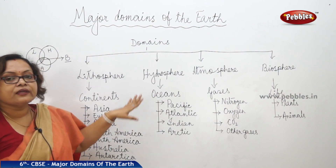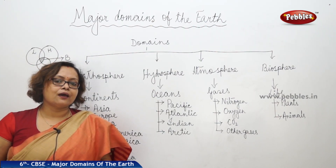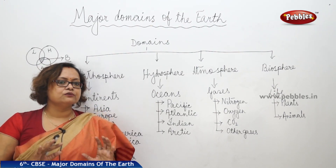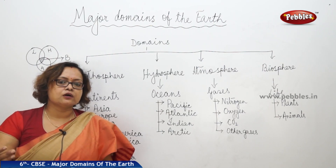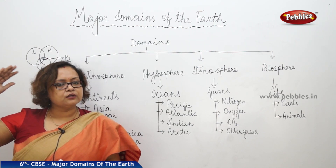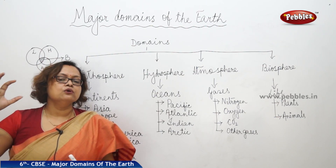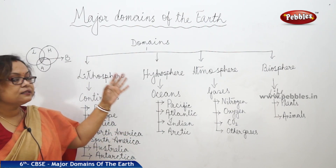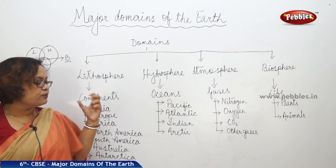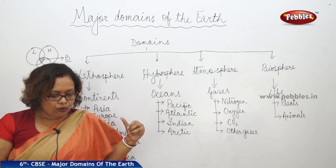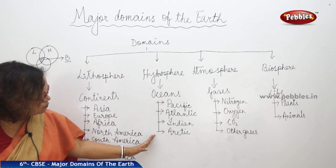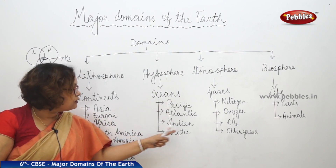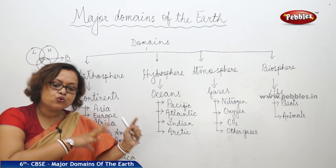We know that earth is called a blue planet because most of the earth consists of water. If you could observe earth from outside, you would see it appears blue. Though it is a blue planet, most of this water is contained only in the oceans — that is the major part of the hydrosphere.